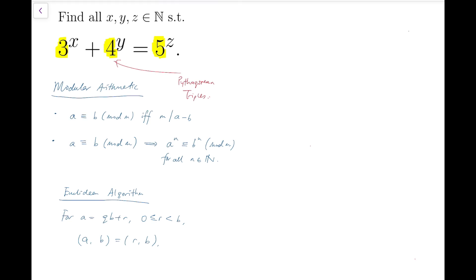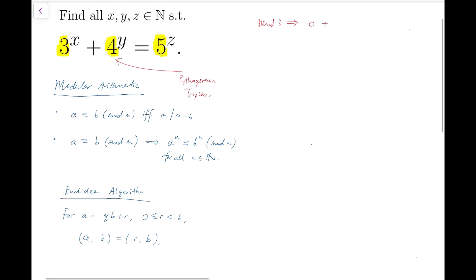So the first step that I'm going to take is to take mod 3 on both sides. As 3 is congruent to 0 mod 3, the first term is then 0 plus 1 to the power of y is congruent to minus 1 to the power of z mod 3. So then we have minus 1 to the power of z is congruent to 1 mod 3, which means z is an even number.